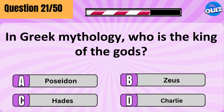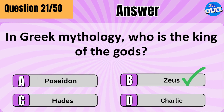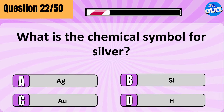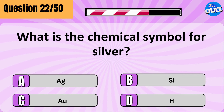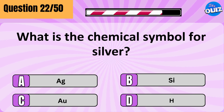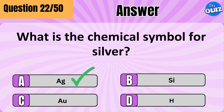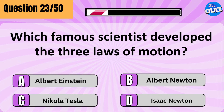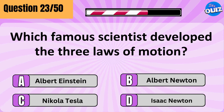In Greek mythology, who is the king of the gods? Zeus. What is the chemical symbol for silver? Ag. Which famous scientist developed the three laws of motion? Isaac Newton.